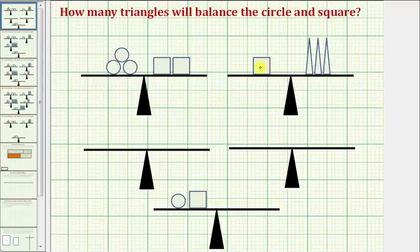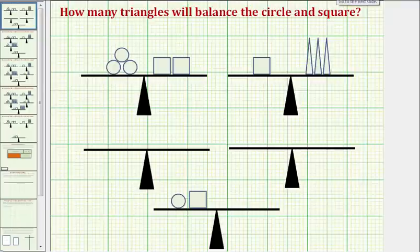Because we know one square balances with three triangles, and we have two squares here, we can perform a substitution and replace these two squares with six triangles. By performing this substitution...